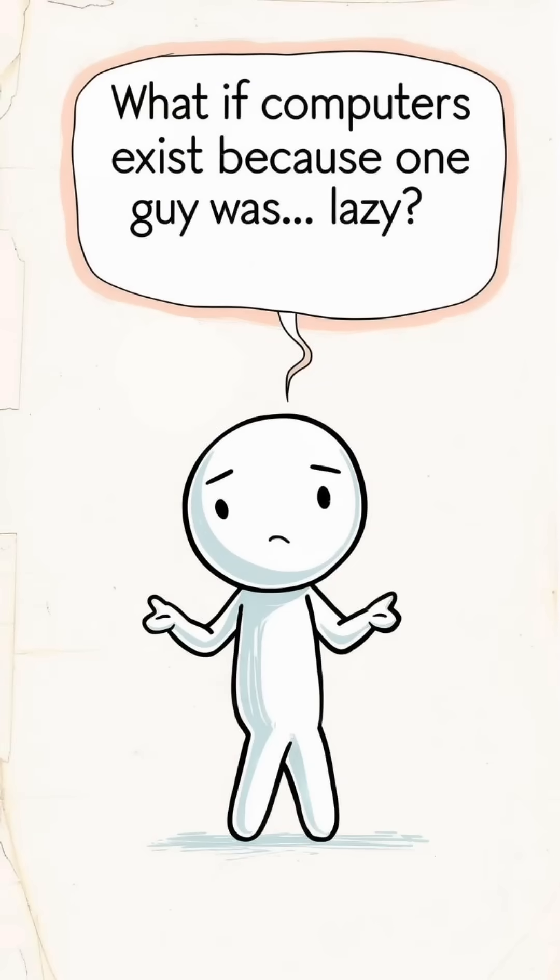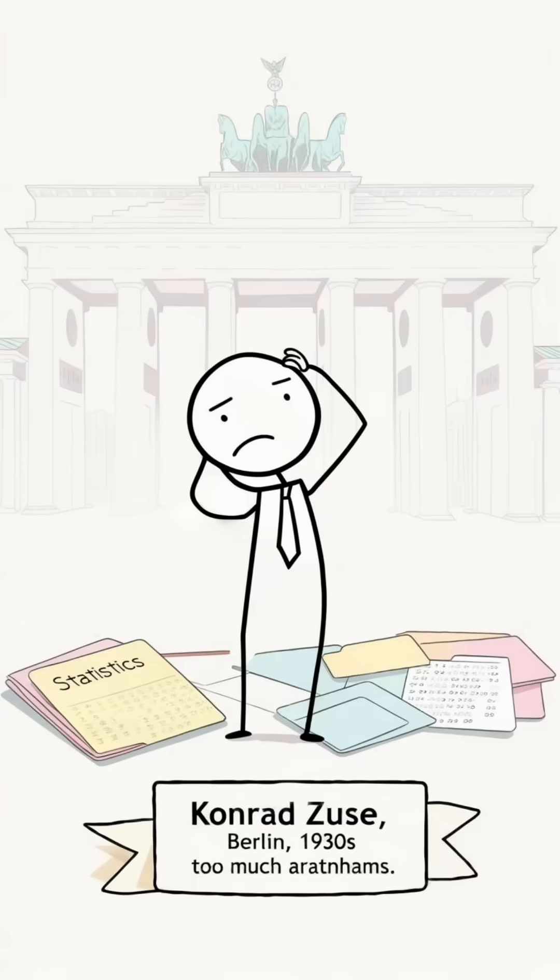What if the computer exists because one guy was lazy? Meet Conrad Zeus, a 1930s Berlin engineering student who hated long statistics homework. Too much arithmetic, not enough life.